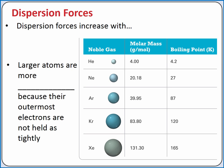But in general, dispersion forces increase with increasing molar mass. As atoms or molecules get larger, they have more and more electrons, and those electrons are held farther from the nucleus. This makes larger atoms more polarizable — that is, it's easier to set up these instantaneous and induced dipoles. This is why boiling points increase for our noble gases going down a column.